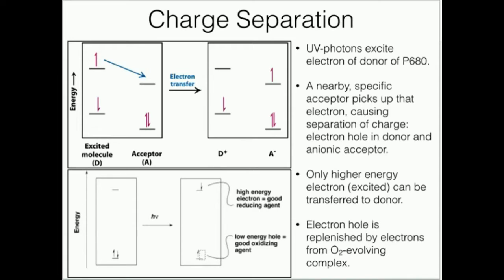Remember that we get these electrons that start off in the donor, which is P680 special pair. Paired up, low energy. As soon as a UV photon strikes the P680 reaction center, one of those electrons goes up into an excited energy state.